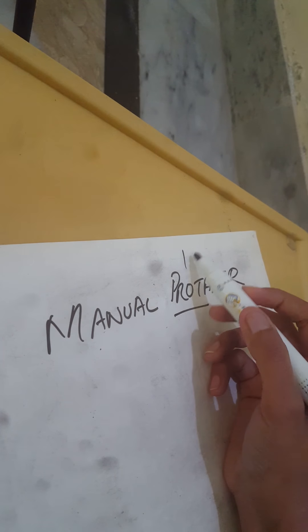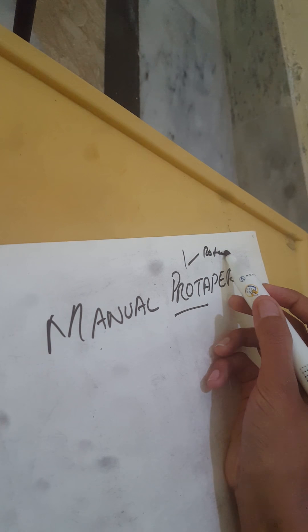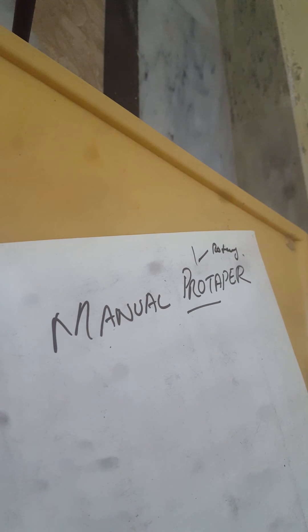In protaper we have two types: manual or rotary. Rotary is by means of the electric device, while the manual is run manually. We use the files and negotiate the canals and do their procedures.